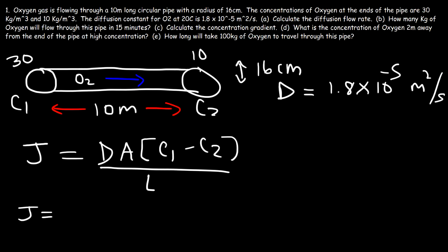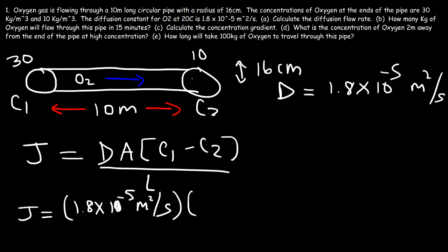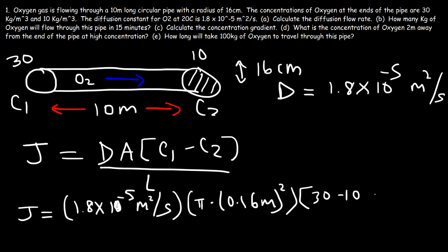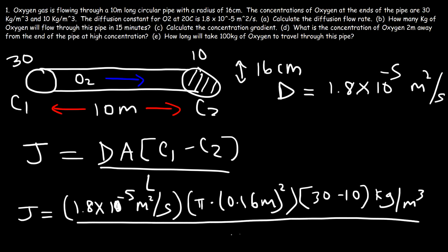Let's plug in what we know. The diffusion constant is 1.8 times 10 to the minus 5 square meters per second. The cross-sectional area of the circular pipe is pi r squared — pi times 0.16 meters squared (converting 16 centimeters to meters by dividing by 100). Multiplied by the change in concentration, 30 minus 10, which has units of kilograms per cubic meter. Divided by the pipe length of 10 meters.